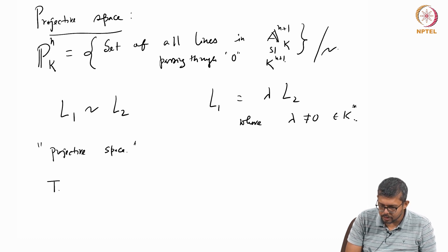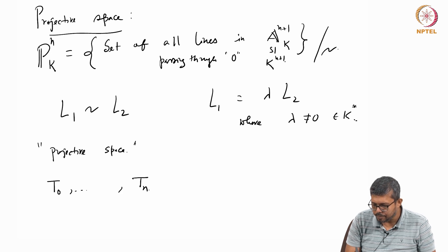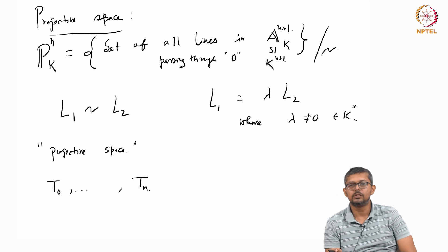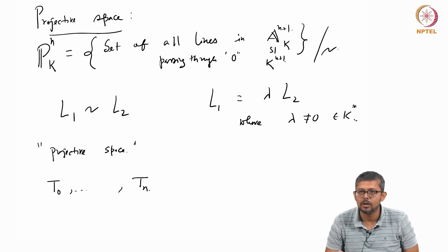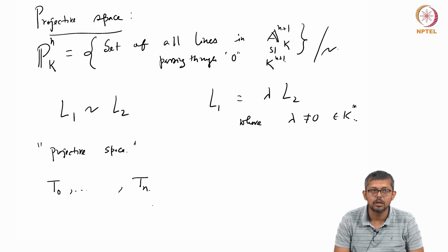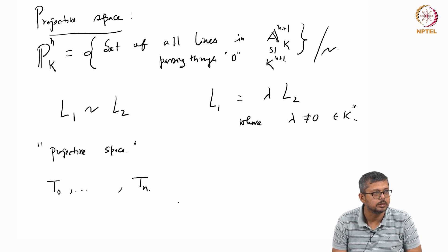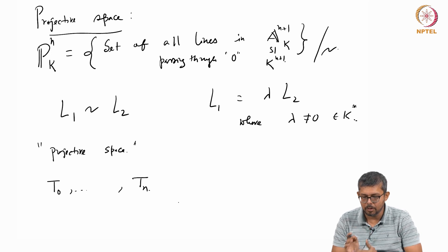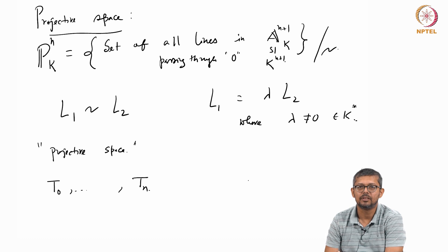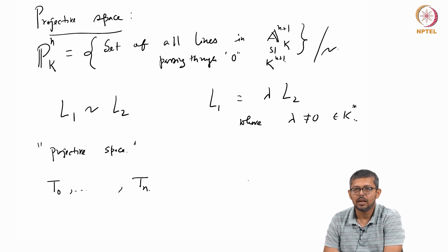So you have this coordinate function, say t_0, t_1, ..., t_n. There are n+1 variables. So you have t_0, t_1 up to t_n, n+1 variables. But problem is that these t_i's are not functions on P^n.